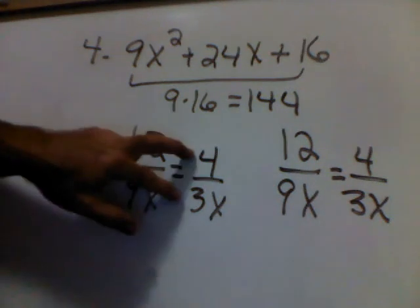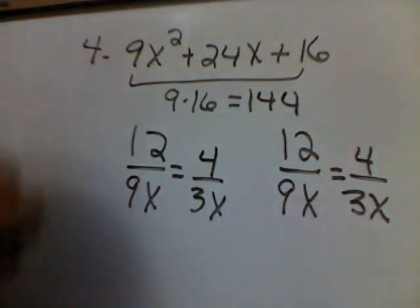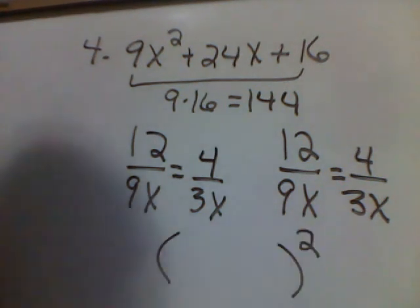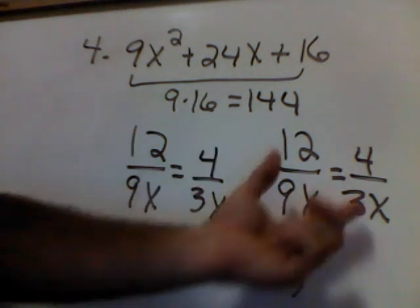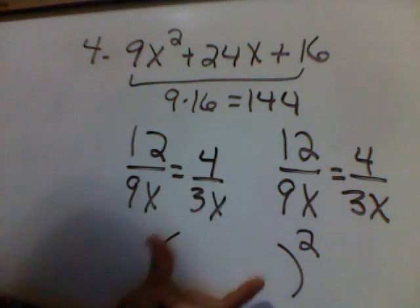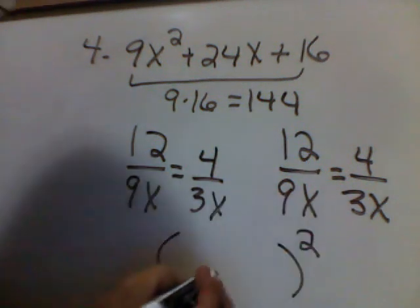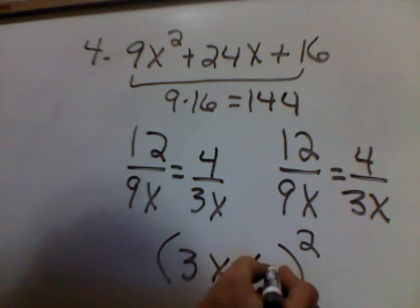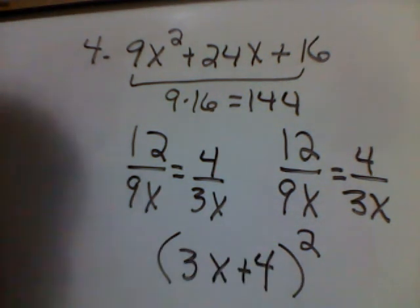Notice, these are identical fractions. So, my final answer is going to be squared. Because, remember, identical factors, I can write as one factor squared. And that factor is 3x plus 4. And, y'all, that is our final answer.